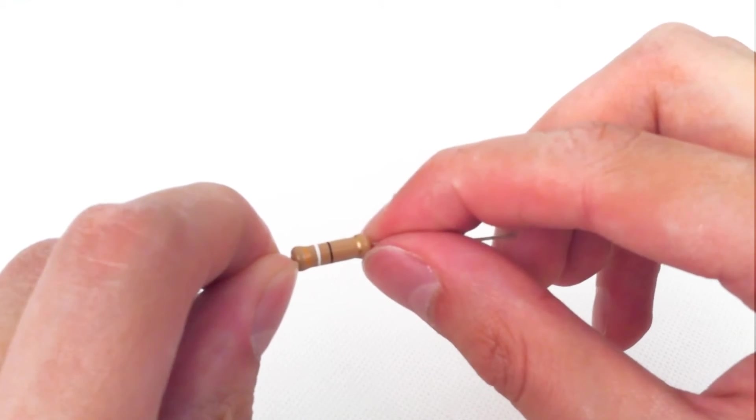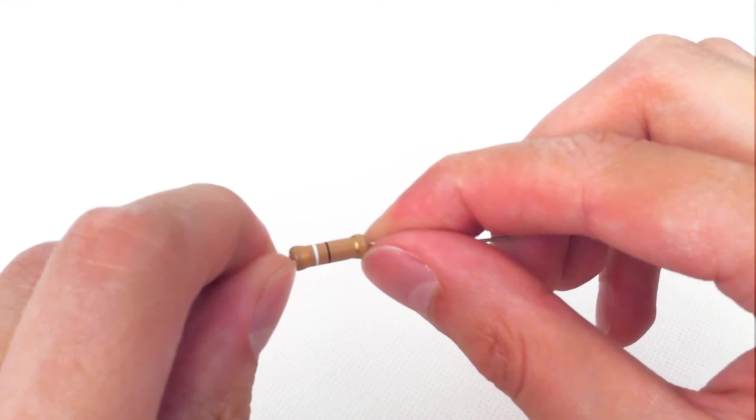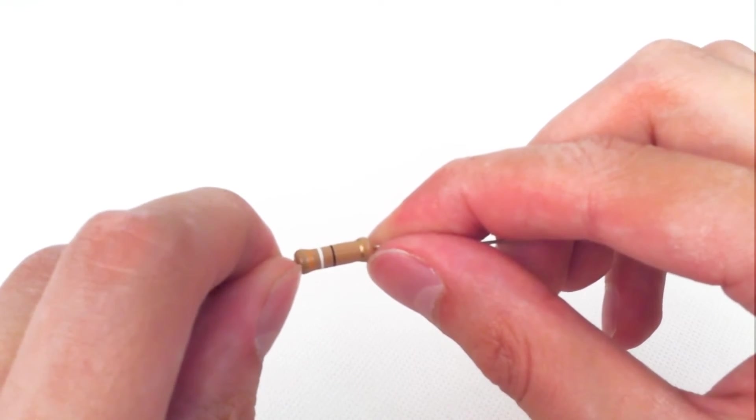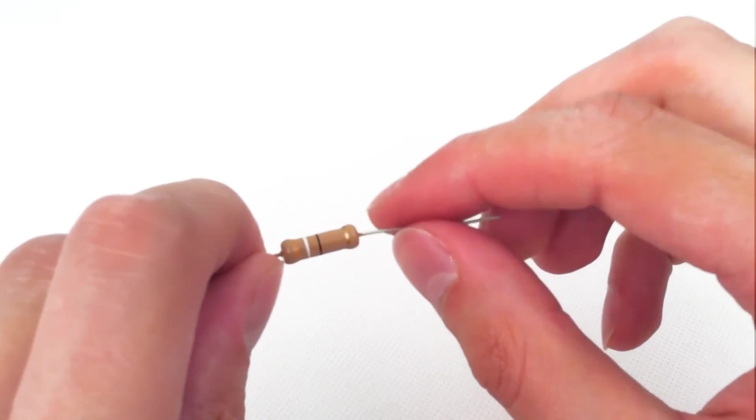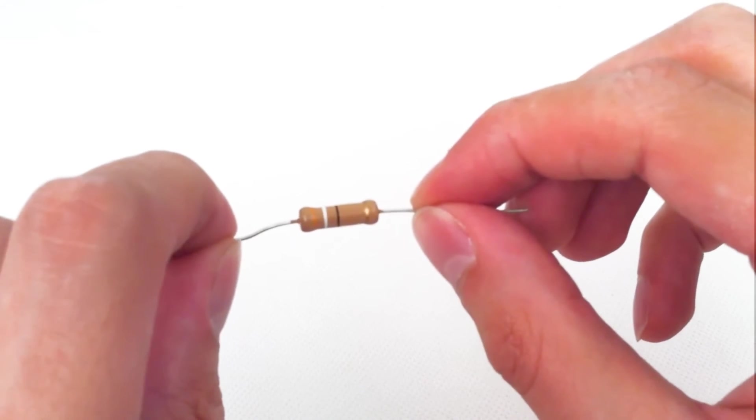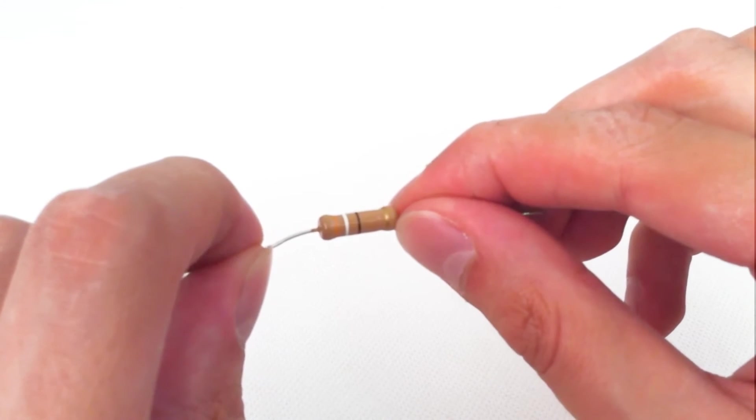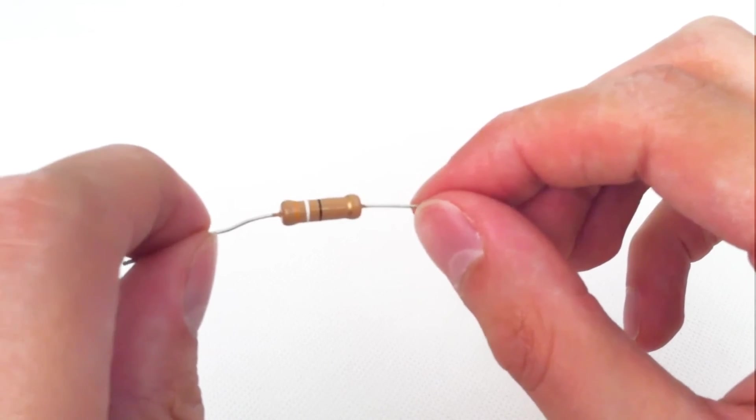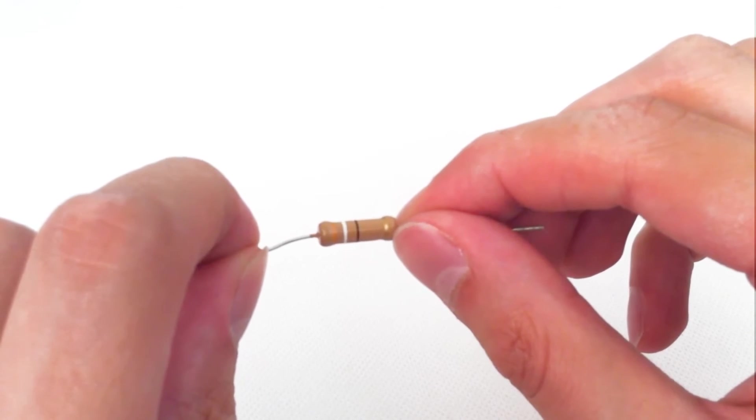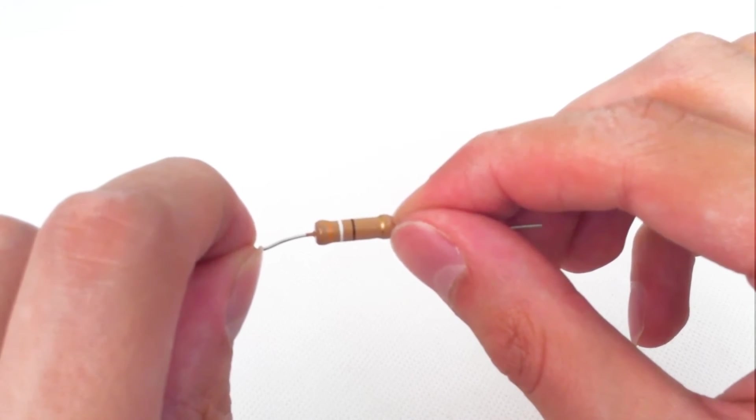The last stripe is the tolerance, and this shows how accurately, if we were to put the resistor in the circuit, the actual tolerance it gives us compared to the value written on here. So this is a gold stripe, which means it has a 5% tolerance. So if we have a 100 ohm resistor with a gold stripe, that means it should give us 95 or 105 ohms.